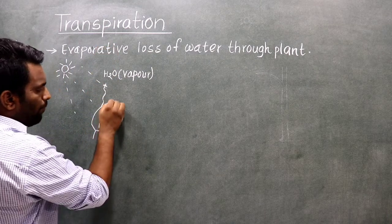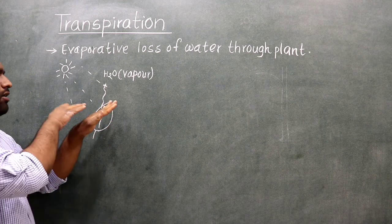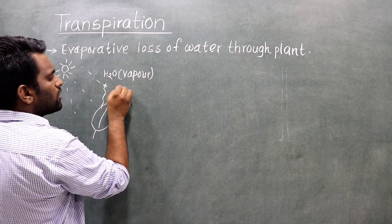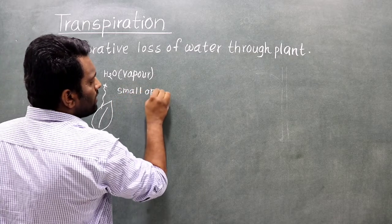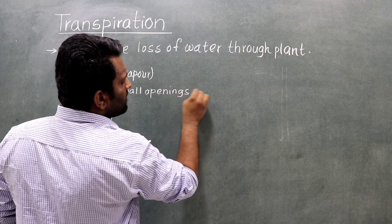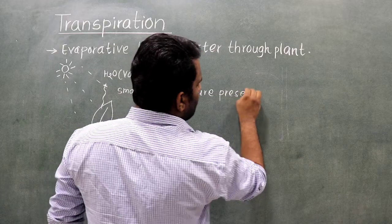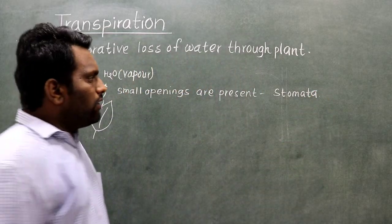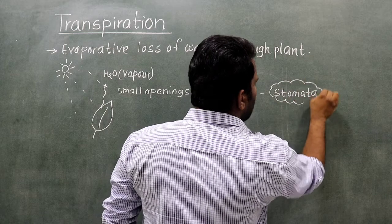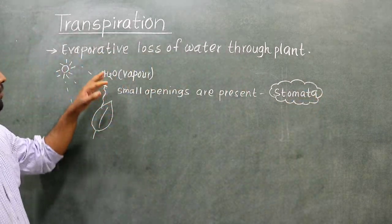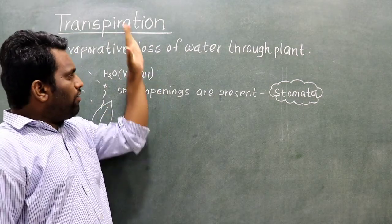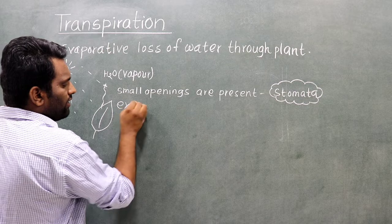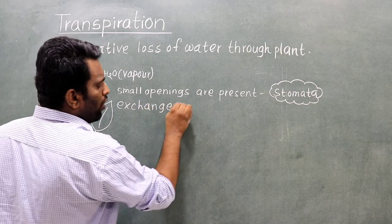Now, regarding the process of transpiration and water loss: leaves have an upper surface and a lower surface. In both surfaces, small pores and openings are present. Those small openings are called stomata. These openings are also useful for the exchange of gases.